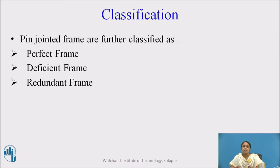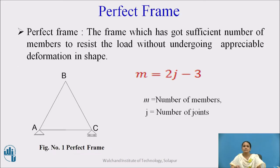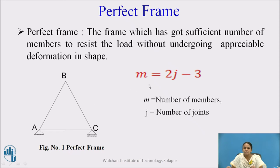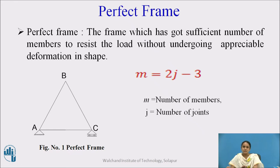Classification of frames: The frames are classified as perfect frame, deficient frame, and redundant frame. Perfect frame: When the number of members are sufficient to resist the applied load, it is known as a perfect frame. Using the equation m = 2j − 3, where m is number of members and j is number of joints — for three members and three joints, you get 3 = 3, satisfying the equation.